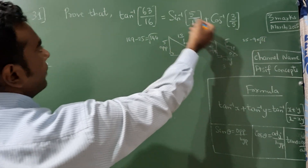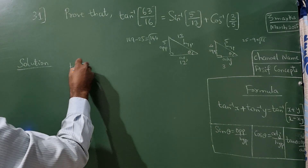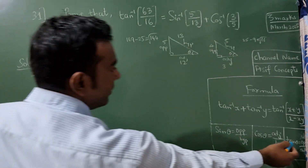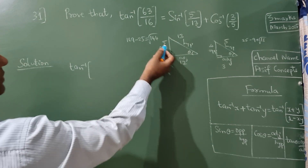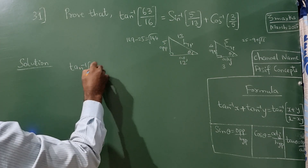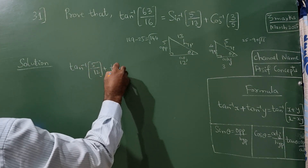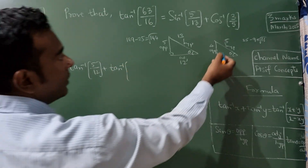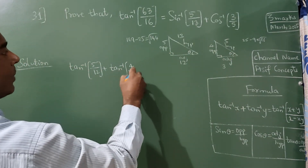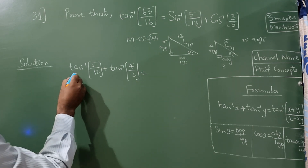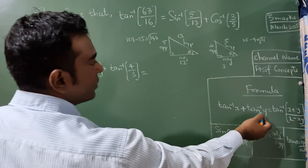Now I am going to convert these trigonometric functions in terms of tan. Tan inverse formula is opposite by adjacent. So for the first triangle, opposite is 5 and adjacent is 12, giving tan inverse of 5 by 12. For the second, opposite is 4 and adjacent is 3, giving tan inverse of 4 by 3.